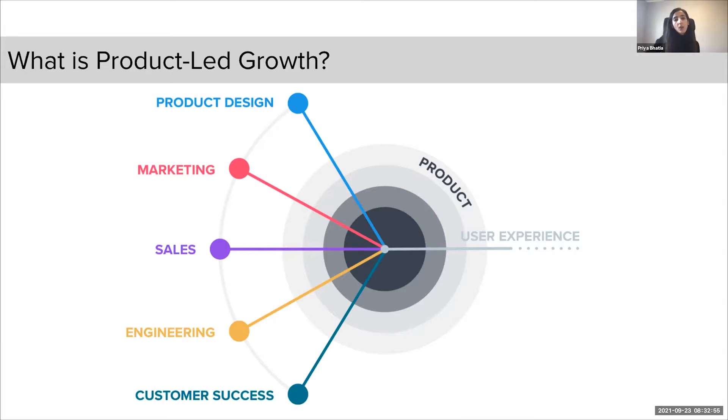Product-led growth is a business methodology that basically relies on the product itself to acquire, expand, convert, and as well as retain users. It creates a company-wide alignment across teams from engineering to sales and marketing around the product as the largest source of sustainable growth. Product-led doesn't mean product-team-led. It means that all factions of the business come together to make the product experience a compelling buy.